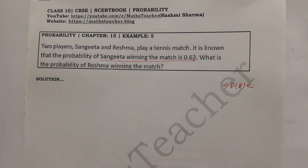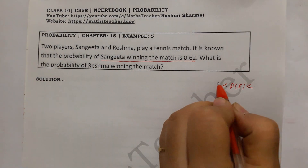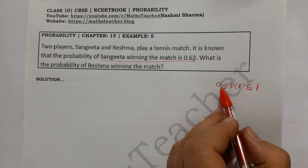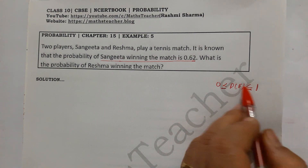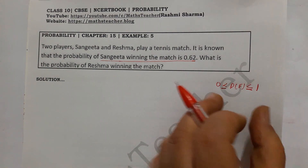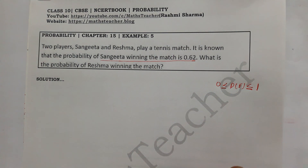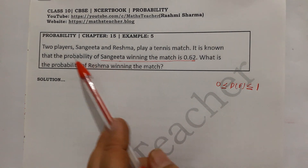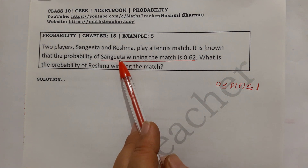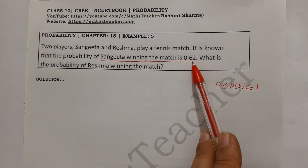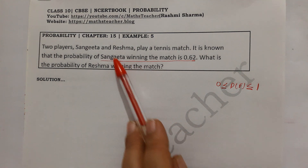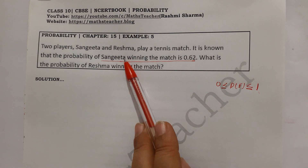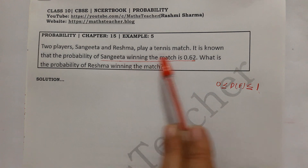We know that the probability of any event is always between 0 and 1 — that is, 0 is less than or equal to P(E), which is less than or equal to 1. So here Sangita has a probability of 0.62 of winning the match, and the total of the two probabilities will be 1.